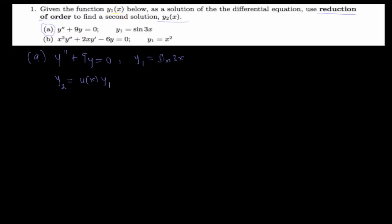Since we're assuming that y2 is a solution of the differential equation, it must satisfy the equation. So since y2 = u·y1 = u·sin(3x), then y2' is the derivative of u times sin(3x), which gives u'·sin(3x) plus u times the derivative of sin(3x), which is 3cos(3x).